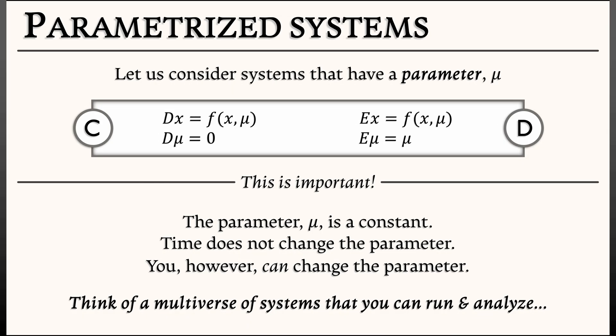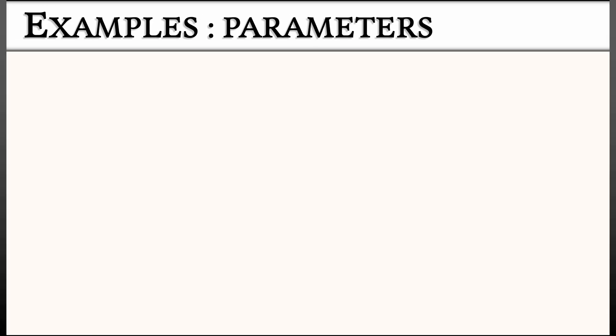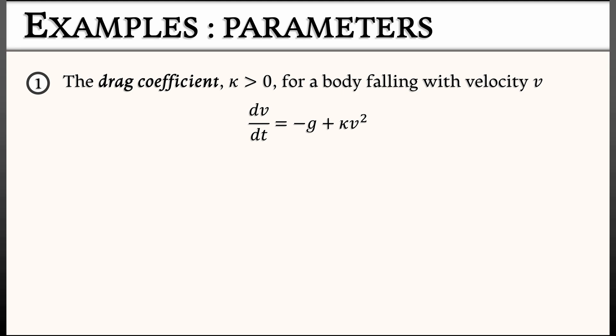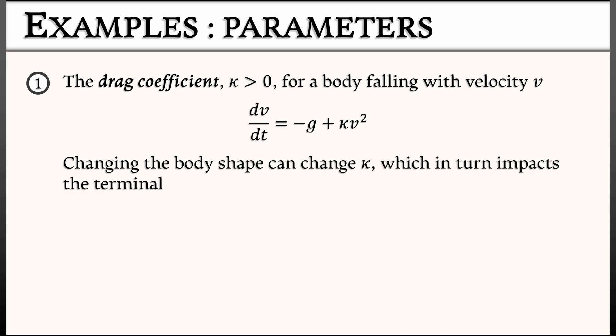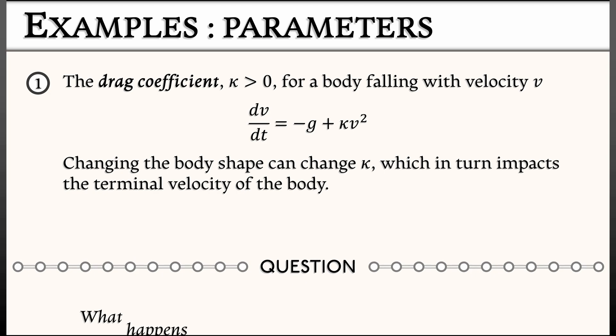What are some examples of systems with parameters? Let's think back to things we looked at right at the beginning of this volume. Let's say we look at the dynamics of a falling body with velocity v. The drag coefficient, κ, is precisely such a parameter. dv/dt = -g + κv². Changing the shape of the body can change that drag coefficient, and in turn, that impacts things like the terminal velocity of that body. That points to the question we want to keep in the back of our mind: what happens to the equilibria in a system when you change a parameter?